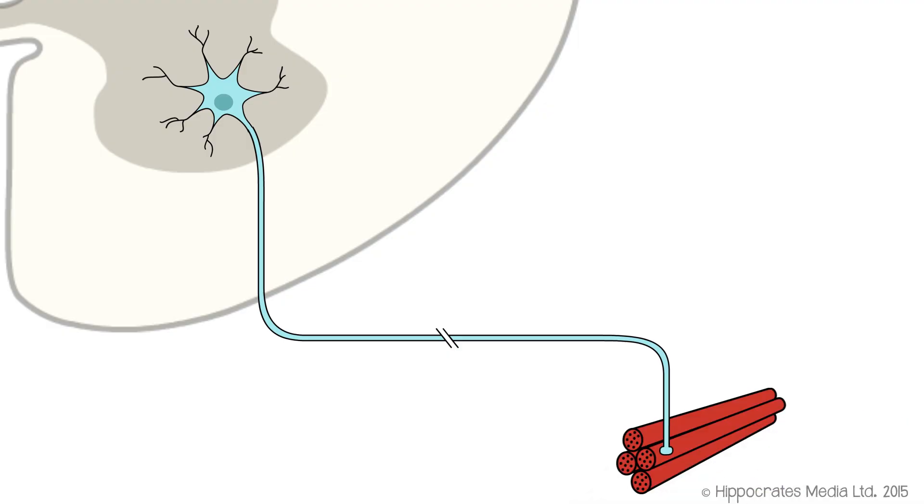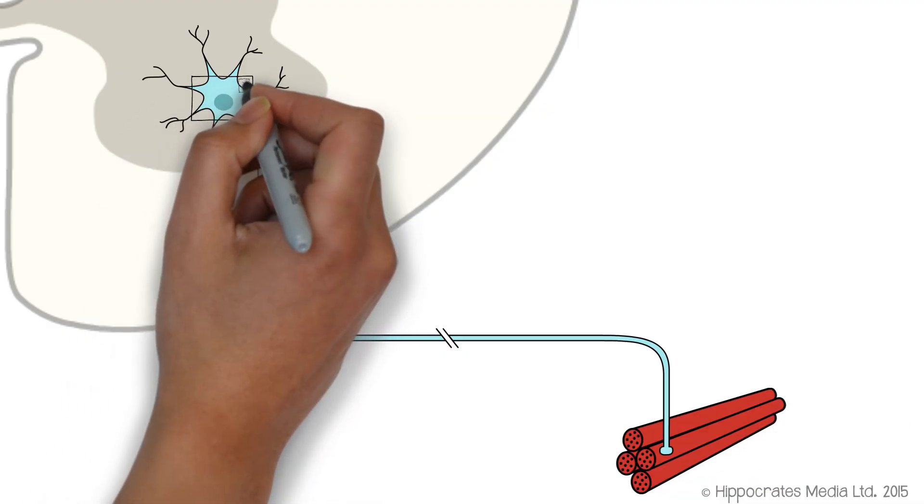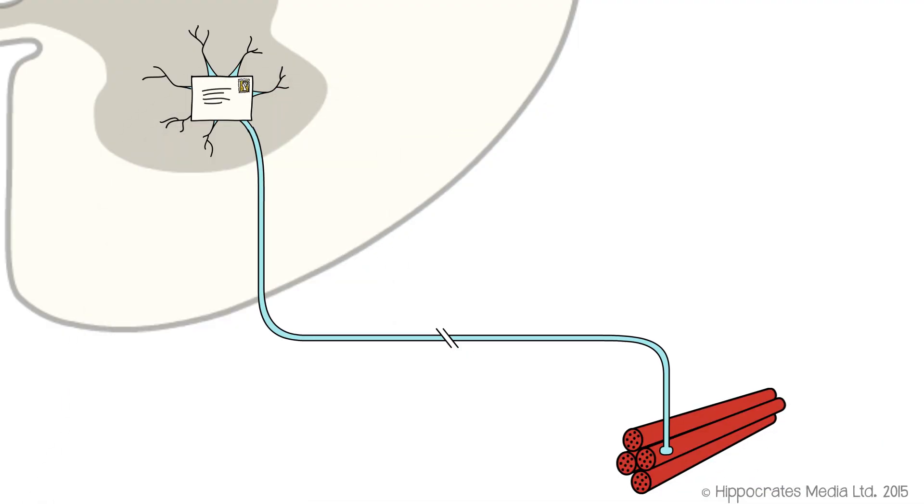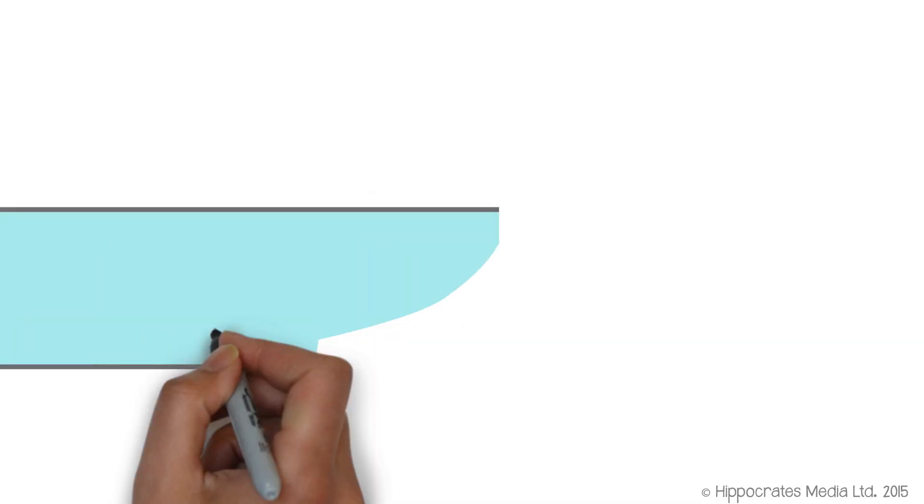Now what the nerve cell needs to do is to send an electrical message to the muscle cell to tell it to contract, and that message takes the form of an action potential, which is a transient depolarization of the membrane of the axon, which propagates along the axon.